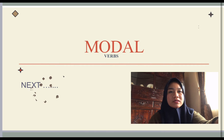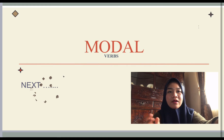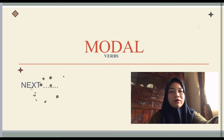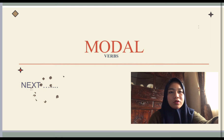A modal verb is an auxiliary verb. This auxiliary verb must be used with the main verb. Auxiliary verbs serve to help other verbs to show tenses and also the mode of the speaker. The forms of auxiliary verbs are do, be, and have. Examples of modal verbs are must, shall, should, would, can, could, may, might, and will.